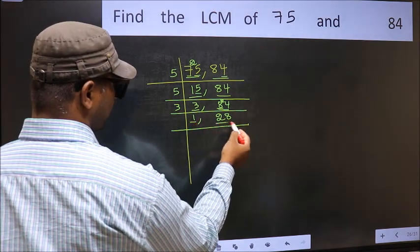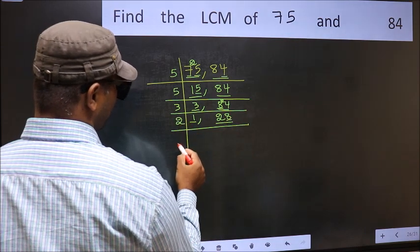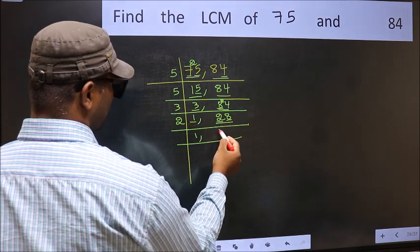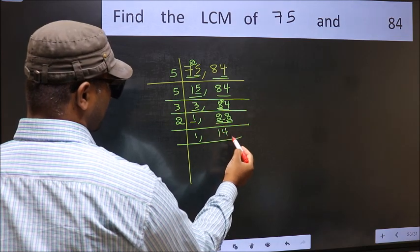Now we got 1 here, so focus on the next number 28. Last digit 8 is even, so take 2. First number 2 - when do we get 2 in the 2 table? 2 once 2. The other number 8 - when do we get 8 in the 2 table? 2 times 4 is 8.